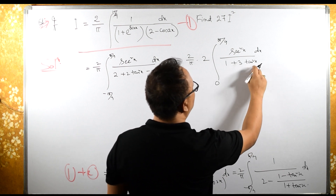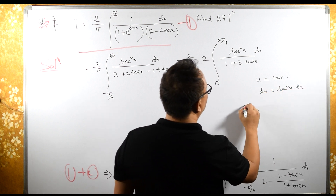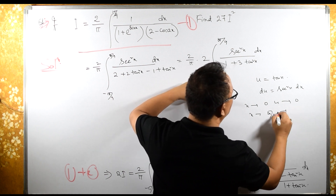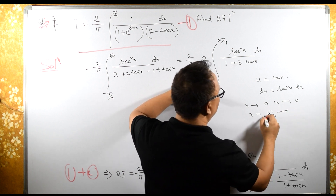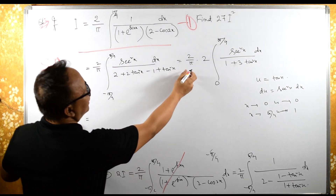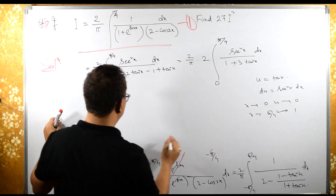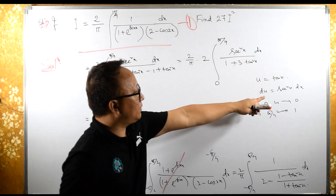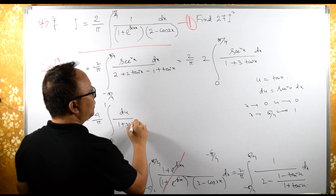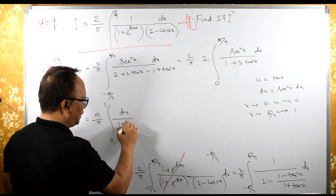Now let's substitute u equals tan x, therefore du equals sec squared x dx. When x tends to 0, u tends to tan 0 which is 0. When x tends to pi by 4, u tends to tan 45 degrees which is 1. Therefore the limit becomes 2 times 2 by pi, which is 4 by pi, integral from 0 to 1, du upon 1 plus 3u squared.